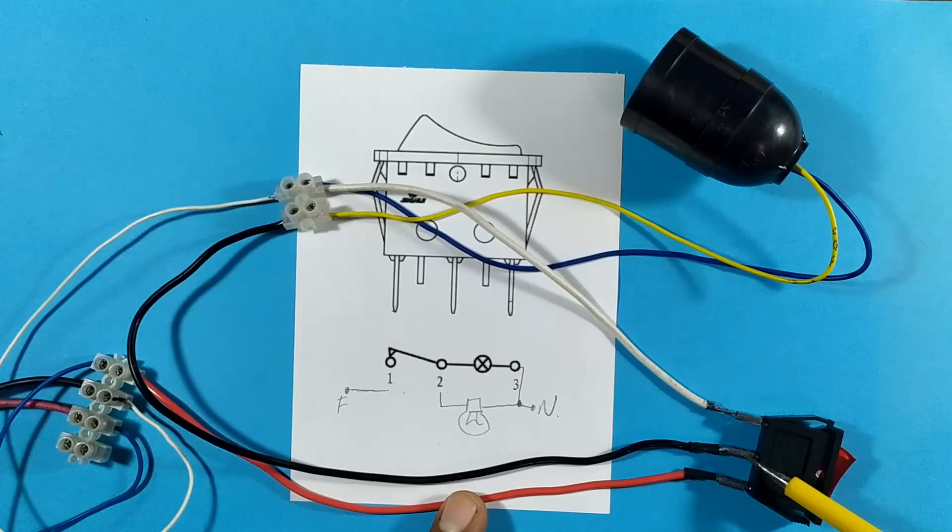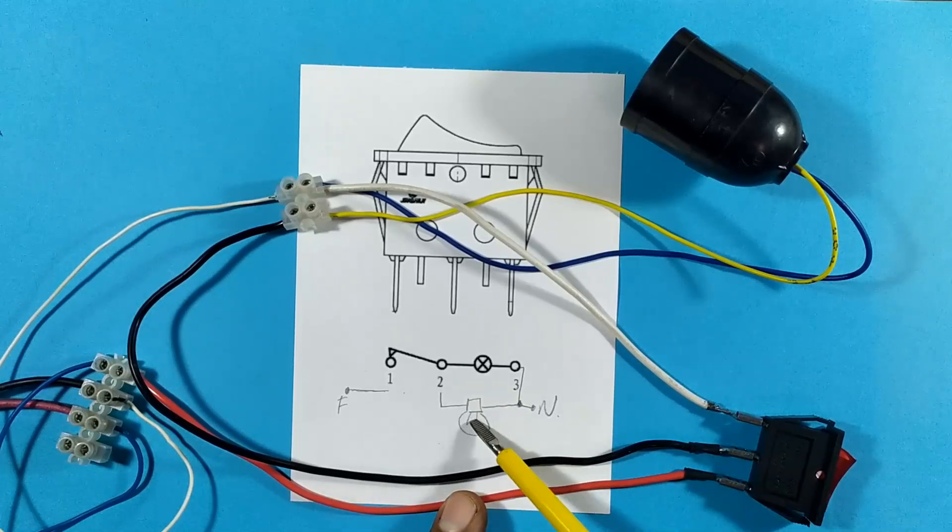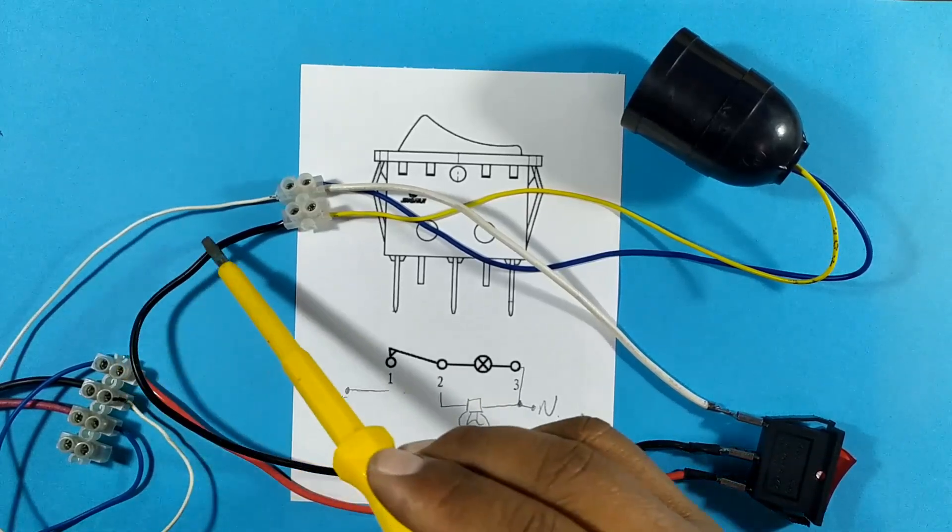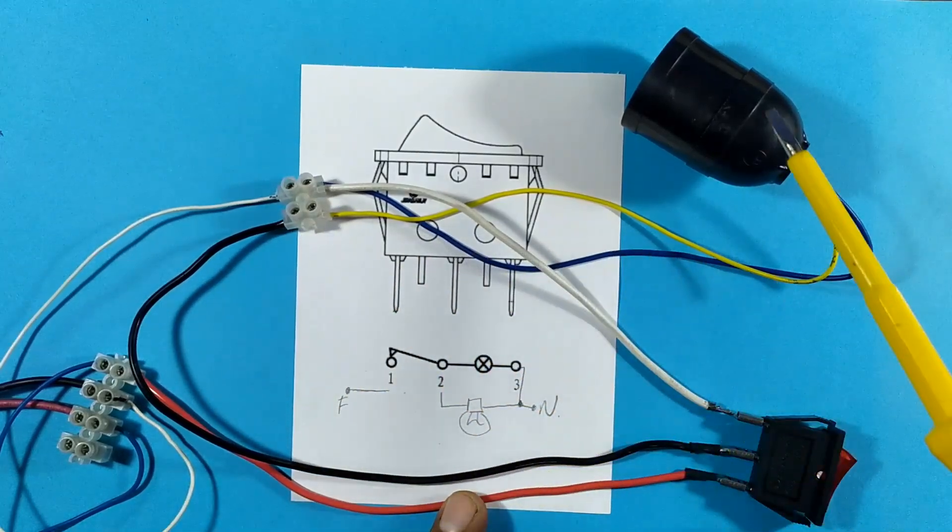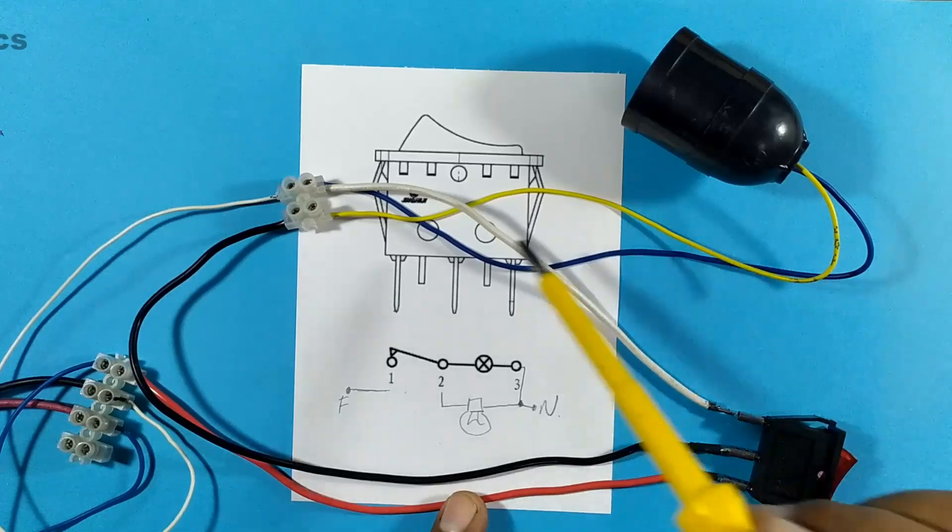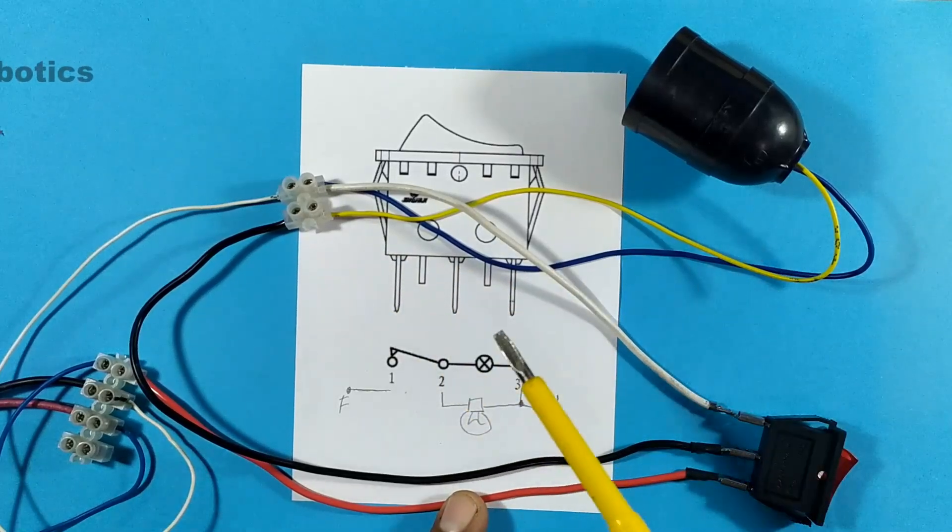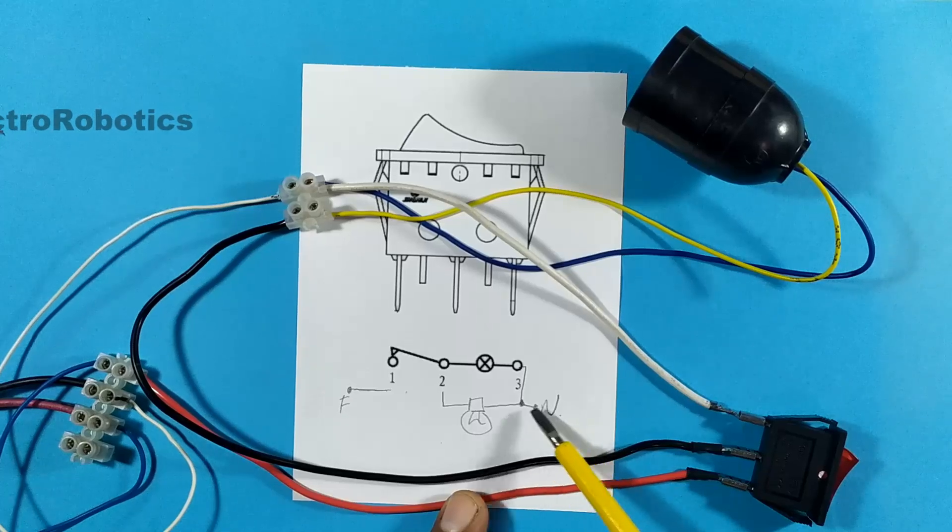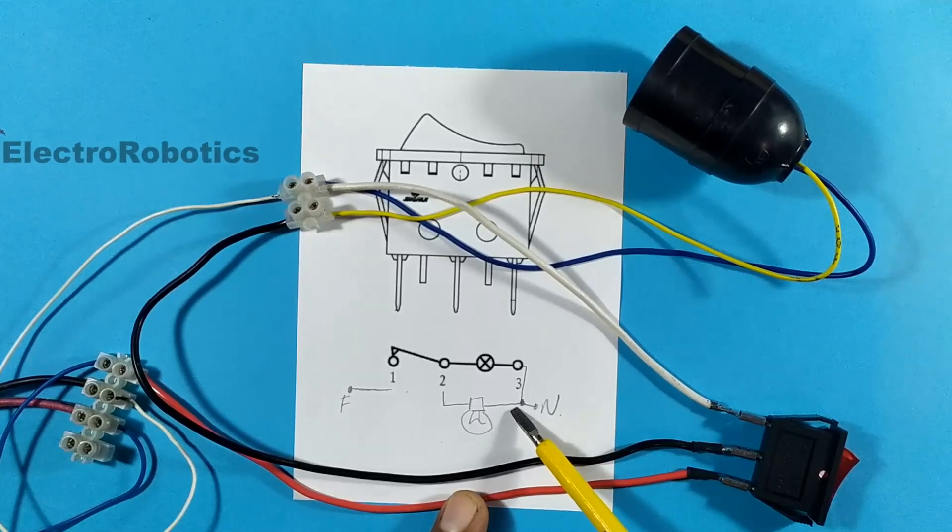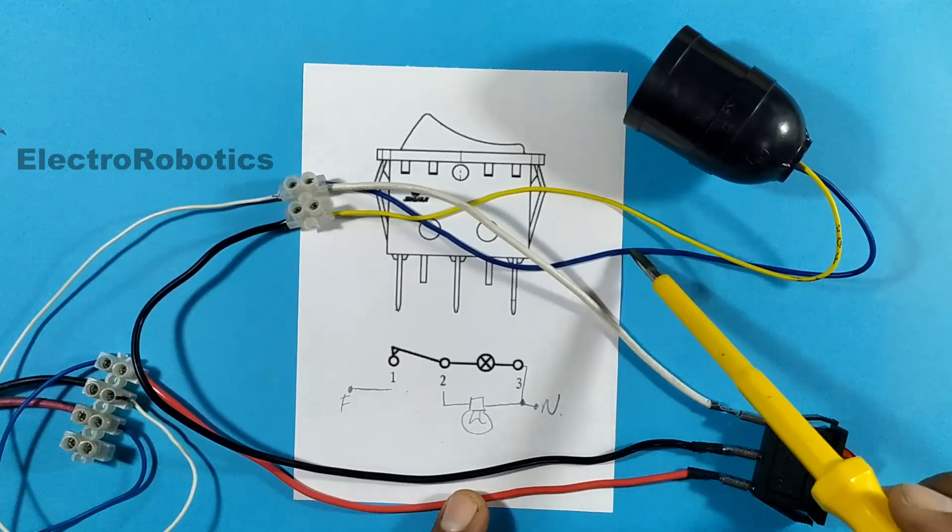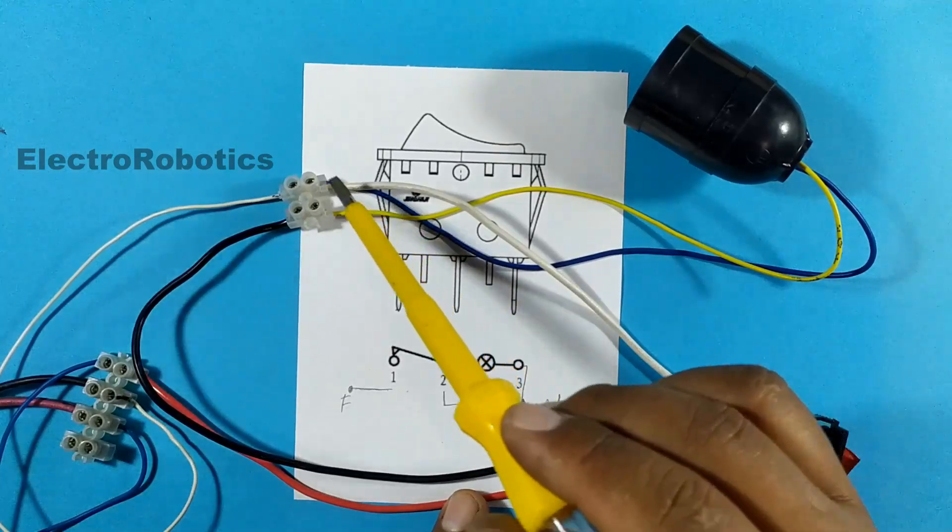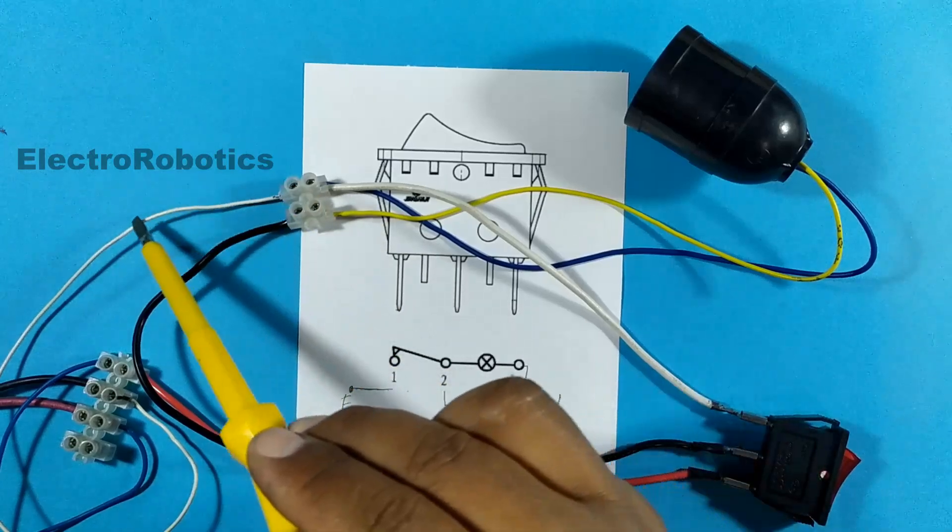Now pin 2, where do you have to go? At one end of the bulb. Since here is the black wire that would be pin 2, from here it goes to one end of the bulb. And then it has to go directly to neutral. From the other end of the bulb, the other end is the blue wire. The blue wire comes here and is connected through the white wire to neutral.